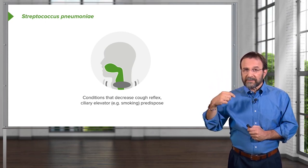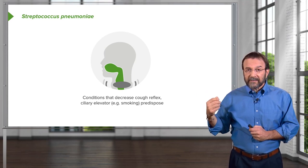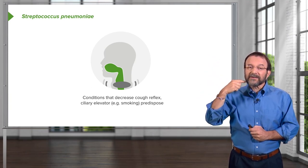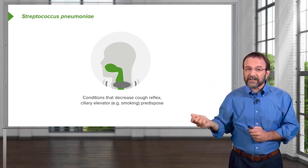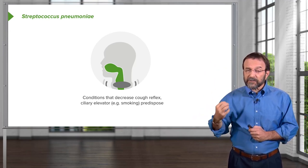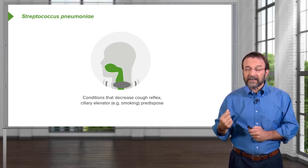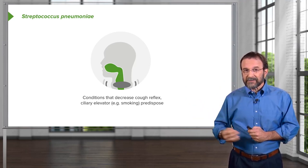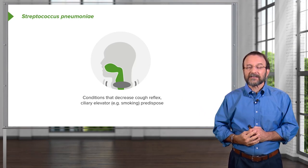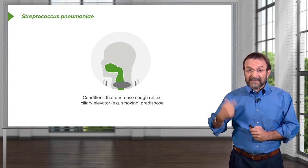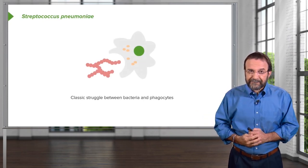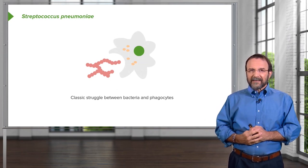If you inhale a particle, you may cough and expel it, or the ciliated elevator may carry it up to the back of your throat where you swallow it to be digested in your stomach. If you smoke, you inhibit that ciliary elevator and slow it down, which is why smokers have greater predisposition to respiratory diseases like pneumococcal pneumonia.